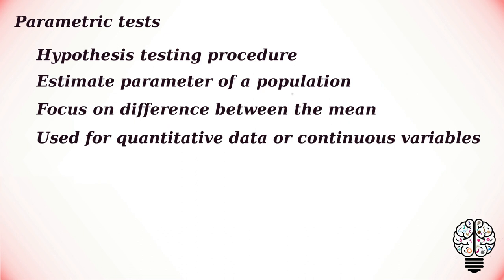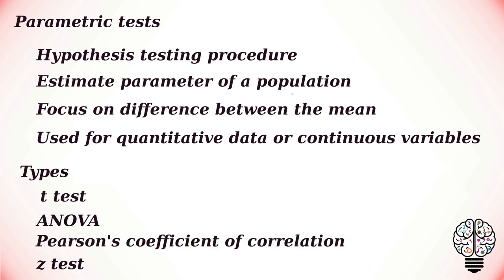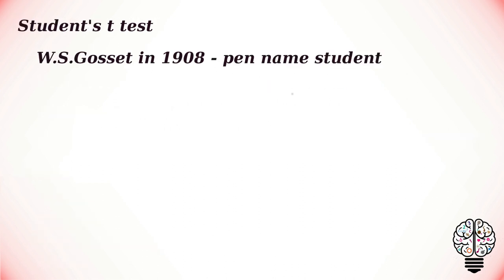Parametric tests are mainly used for quantitative data or for continuous variables. Some of the types of parametric tests are t-test, ANOVA, Pearson's coefficient of correlation, and z-test. In this video we are going to take a deeper look at the t-test, generally called the Student's t-test.